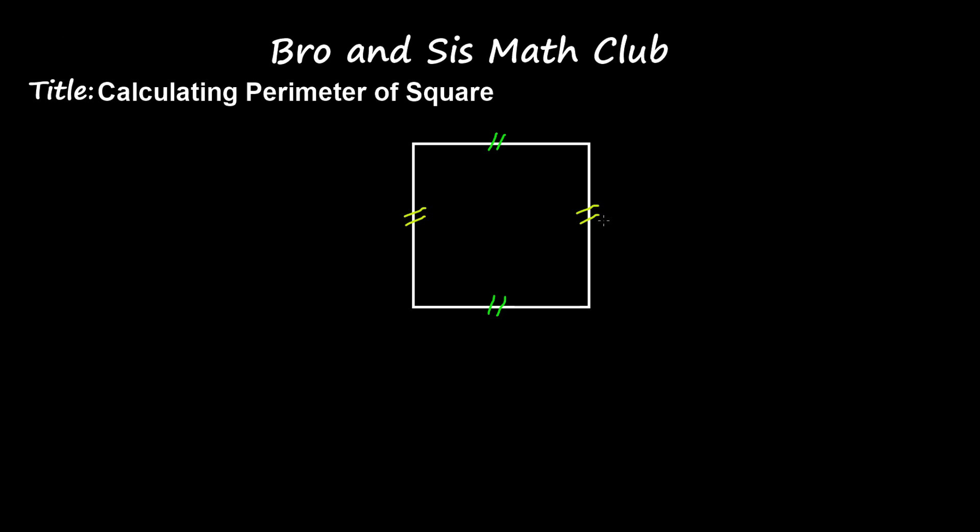Now, another thing is that each side has the same length. Each side measures the same length. So I can call each of these sides side A. There are four side A's.